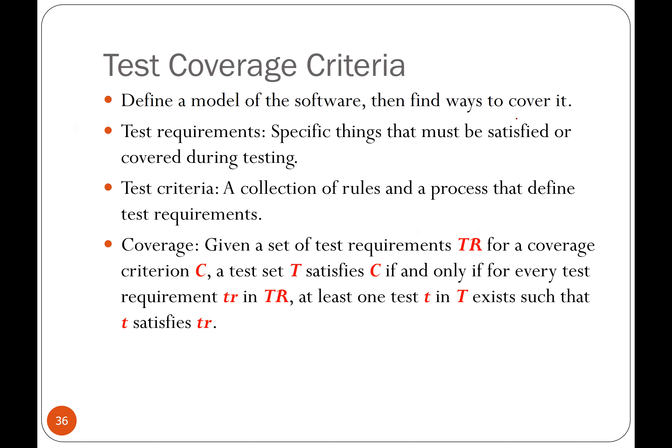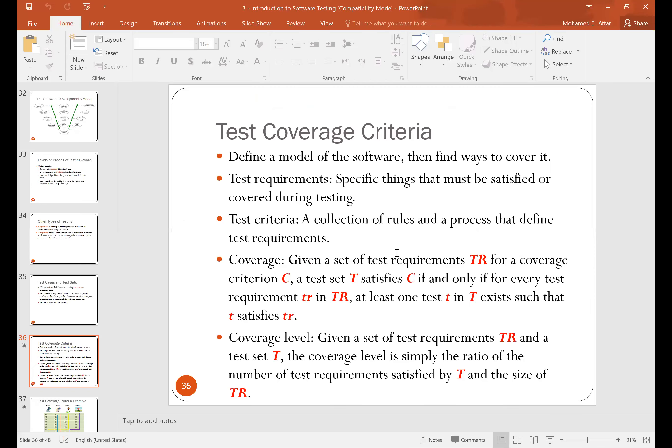We want to define a model of the software — usually in graphical form — and find different ways to cover it. To cover it, we need what are called test requirements (TRs). A test criteria is a collection of rules and a process that defines those test requirements. Given a set of test requirements TR for a coverage criterion C, a test set T satisfies the criteria if and only if, for every test requirement TR, at least one test T exists that satisfies it.